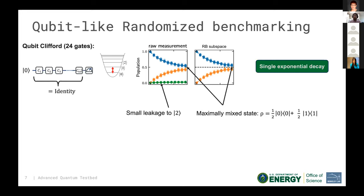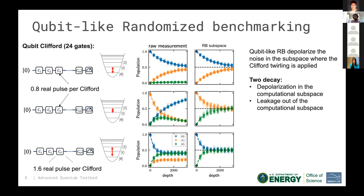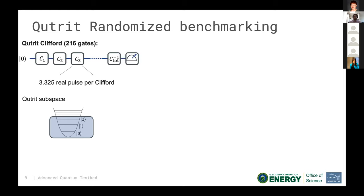For qutrits, you can apply the same idea to subspaces within the qutrit Hilbert space, but the decay curves become much more complex. The randomized benchmarking sequence still depolarizes noise in its subspace, but leakage out of that computational subspace becomes very strong, giving two decay components — one from RB and one from leakage. This means you no longer have a single number comparable to qubit processors, and you lose accuracy due to this extra decay.